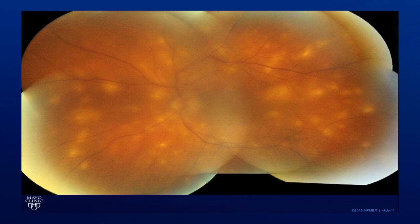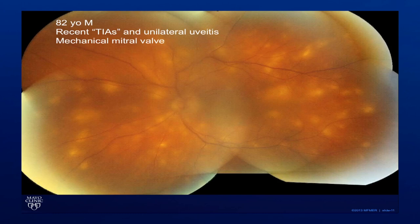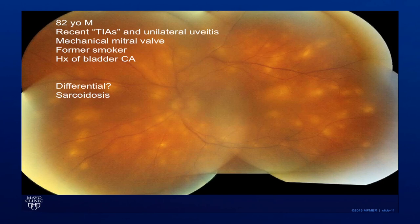Here we are again looking at our montage color photo of the left eye. This is an 82-year-old man with recent TIAs and unilateral uveitis, a mechanical mitral valve, former smoker, and a history of bladder cancer. Taking these things into account, the differential could include sarcoidosis, metastatic cancer, or an infection.